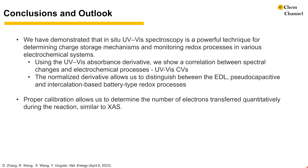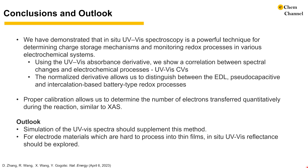We have demonstrated that in-situ UV-Vis spectroscopy is a powerful technique for determining charge storage mechanisms and monitoring redox processes in different electrochemical systems. We demonstrated a close correlation between UV-Vis absorbance derivative and electrochemical reactions through UV-Vis CVs, which allowed us to distinguish charge storage mechanisms and calculate electron transfer numbers, similar to XAS. Compared to conventional methods, UV-Vis spectroscopy is affordable, accessible, fast, and non-destructive. We envision that UV-Vis will play an increasingly important role in in-situ studies of a wide range of electrochemical phenomena, from energy storage to SEI formation, electrolyte decomposition, electrocatalysis, electrochromism, and electrochemical modulation of materials properties.